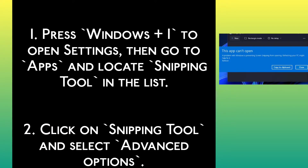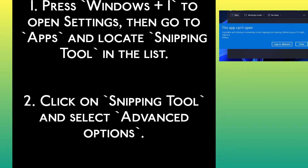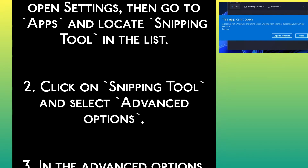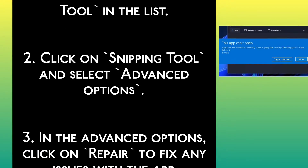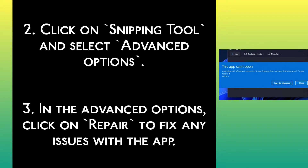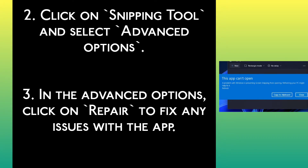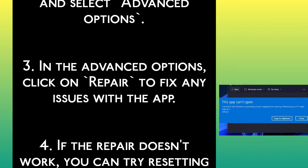Step 2: Click on Snipping Tool and select Advanced Options. Step 3: In the Advanced Options, click on Repair to fix any issues with the app.